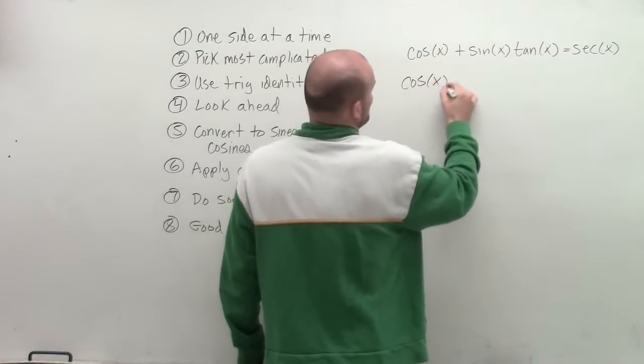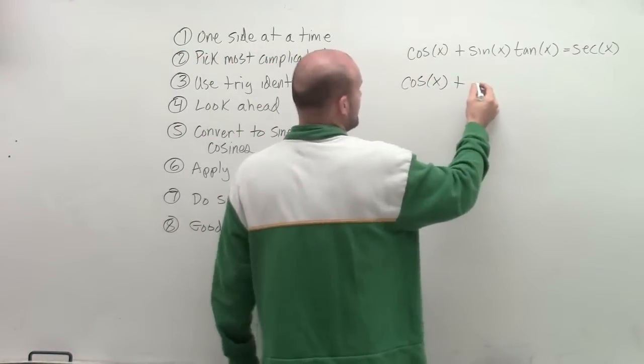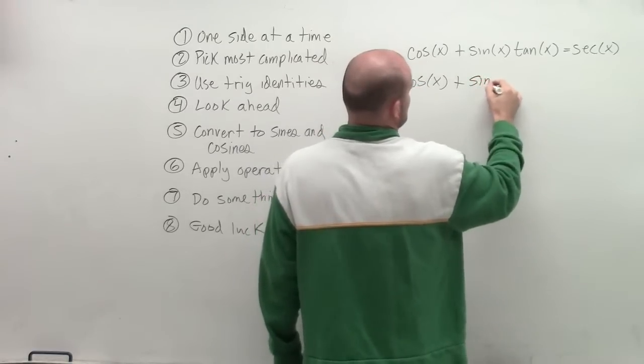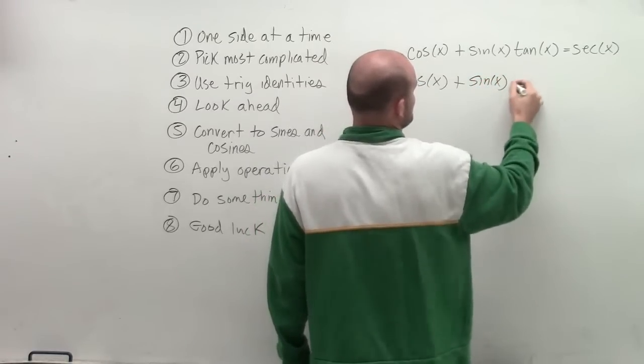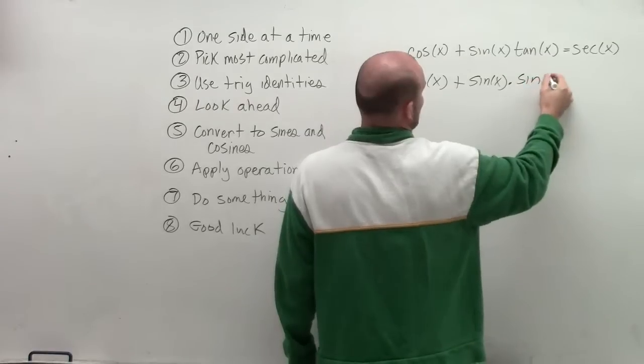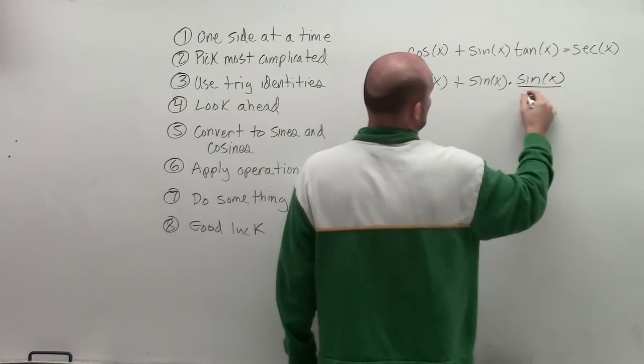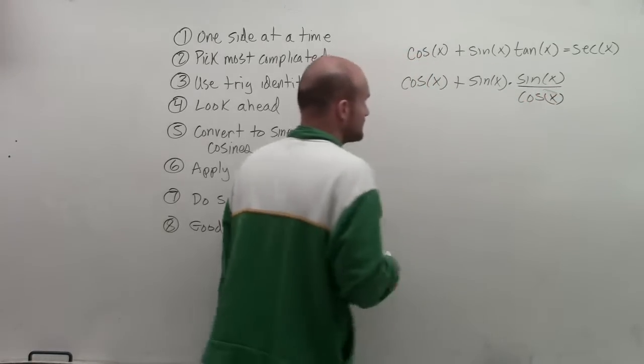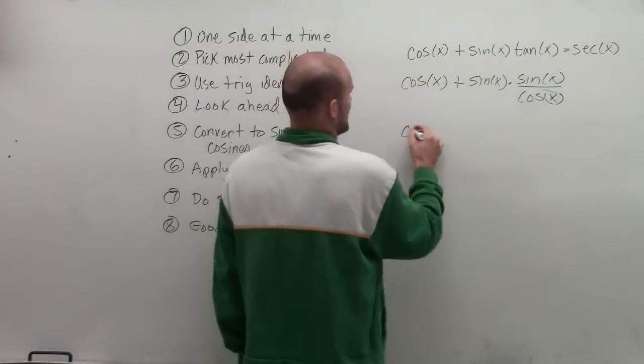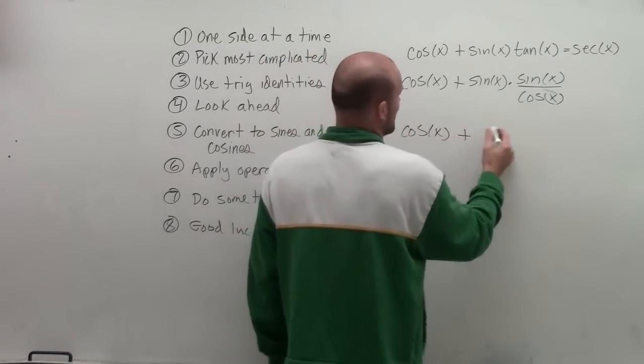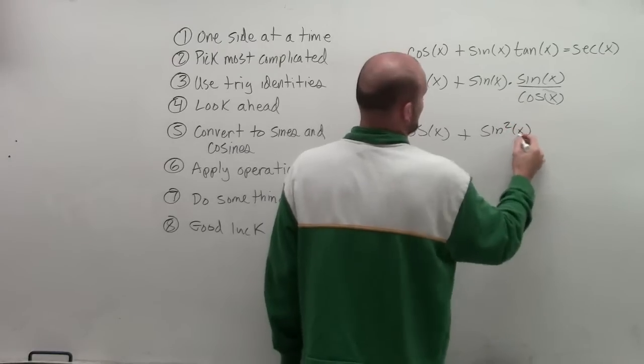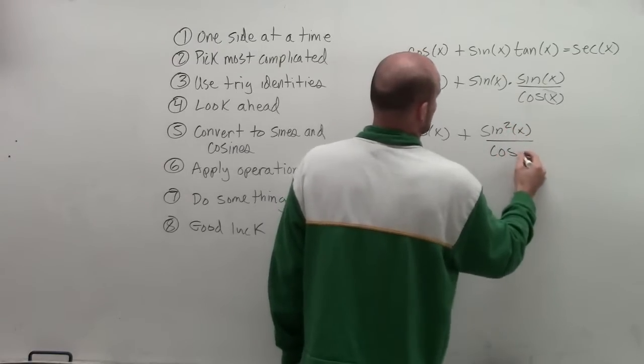So therefore, I have cosine of x plus, let's see here. I'm going to have sine of x times sine of x over cosine of x. So therefore, I'm now going to have cosine of x plus sine squared of x all over cosine of x.